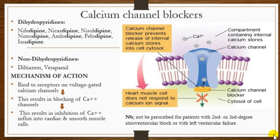Nimodipine is a highly lipid-soluble calcium channel blocker that penetrates the blood-brain barrier. It is recommended for use in subarachnoid hemorrhage, where it selectively relaxes the cerebral vasculature, decreases cerebral blood vessel spasm, and limits the extent of brain damage. Nimodipine is the drug of choice in the management of hypertension in subarachnoid hemorrhage.